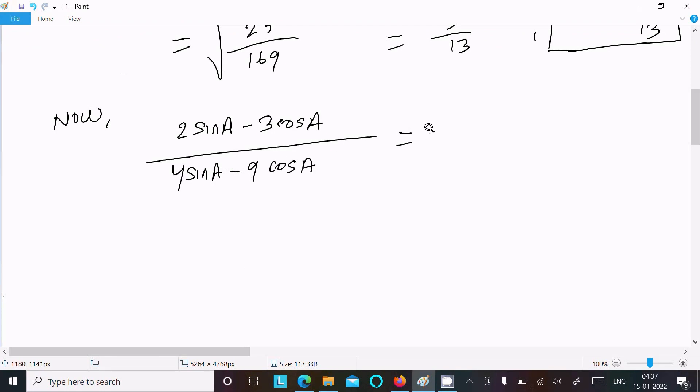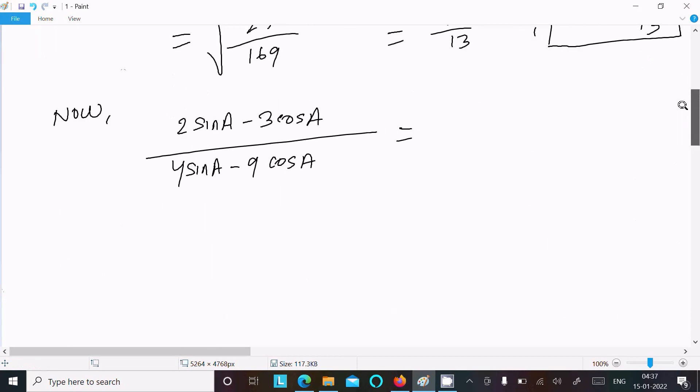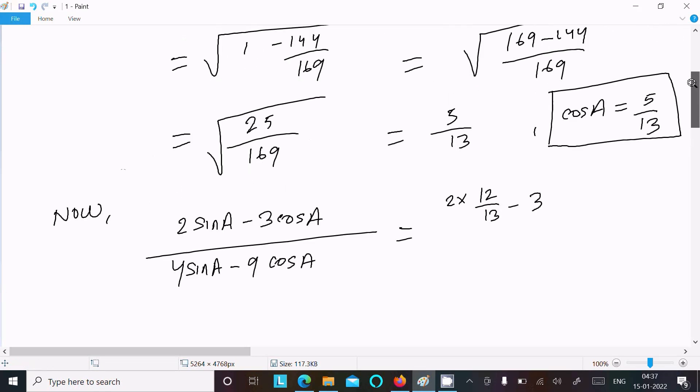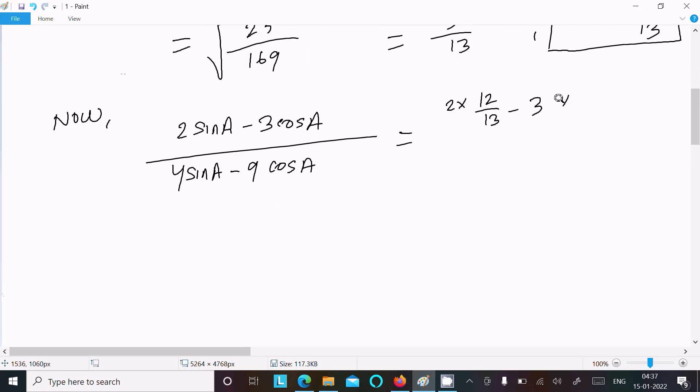Substituting the values: 2(12/13) - 3(5/13) divided by 4(12/13) - 9(5/13).